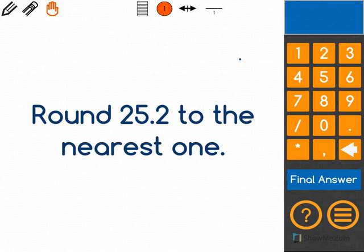This math problem asks us to round 25.2 to the nearest one. I'm going to show you how to solve this two different ways.